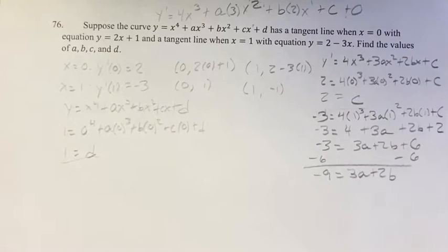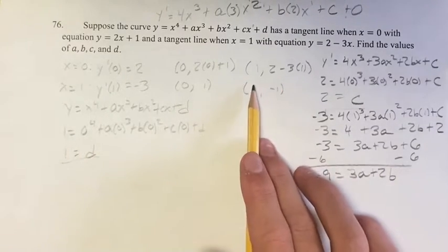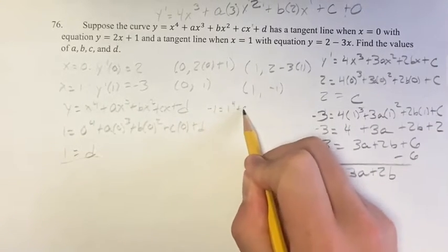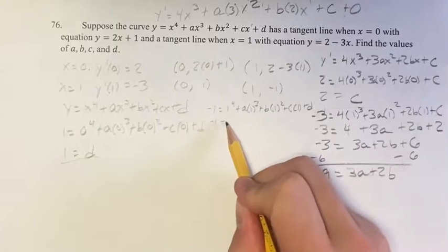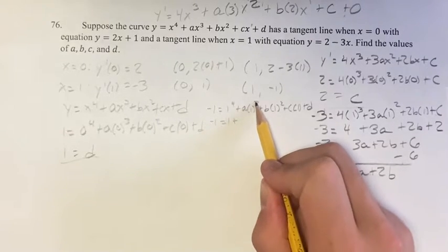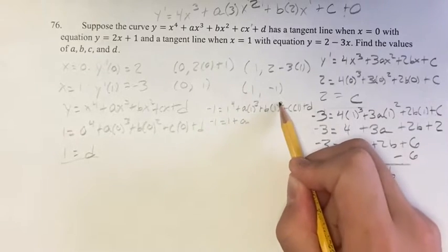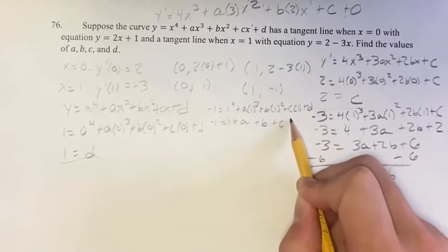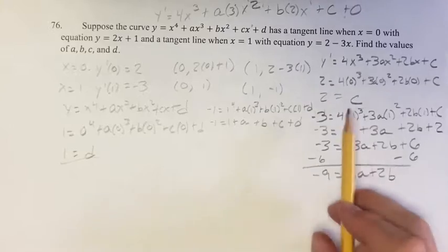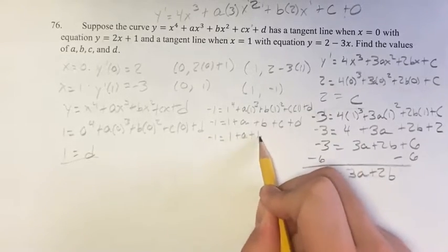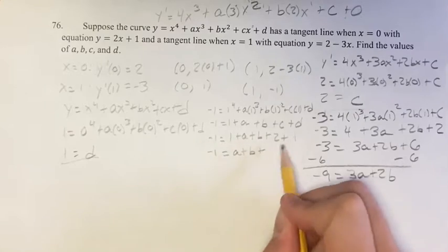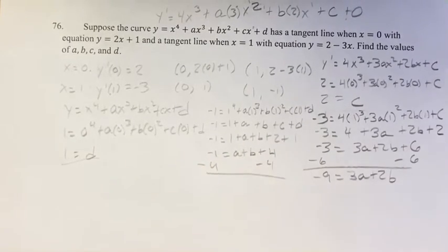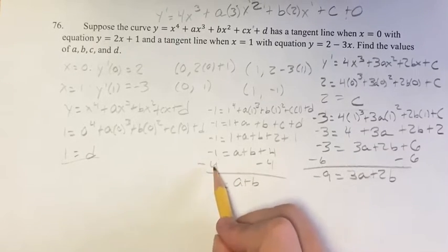We're going to use the last point. We know that 1, negative 1 is also on the curve, so we plug in negative 1 for y and 1 for x: negative 1 equals 1 to the 4th plus a times 1 cubed plus b times 1 squared plus c times 1 plus d, which gives negative 1 equals 1 plus a plus b plus 2 plus 1, so negative 1 equals a plus b plus 4. Subtracting 4 from both sides: a plus b equals negative 5.